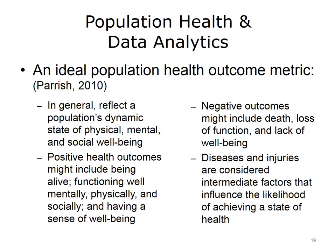What does population health entail for data analytics? The primary concern relates to what kind of metrics are relevant and how they should be accessed. An ideal population health outcome metric, as described in Parrish's 2010 article, has four characteristics. In general, it should reflect a population's dynamic state of physical, mental, and social well-being.